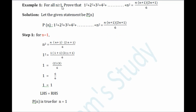For all n ≥ 1, prove that 1² + 2² + 3² + 4² + ... + n² = n(n+1)(2n+1) / 6. So what we have to prove is that the left hand side is equal to the right hand side. Let us look at the solution.